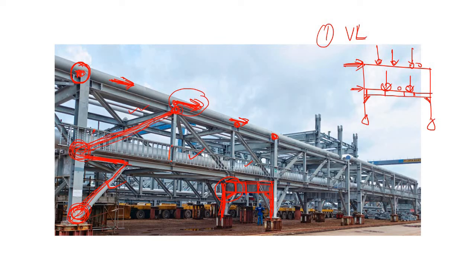Now let's say you have some lateral load acting at this point — how is it going to transfer to the foundation? It will come to the nearest bracing, in this case this one, then go to the foundation. If you have a lateral load at another point, it goes to that nearest bracing. Similarly, lateral loads here travel to this bracing and finally to the foundation. If there is lateral load at the top, it goes to this point, then to this bracing, travels the long beam, and finally goes to the foundation.